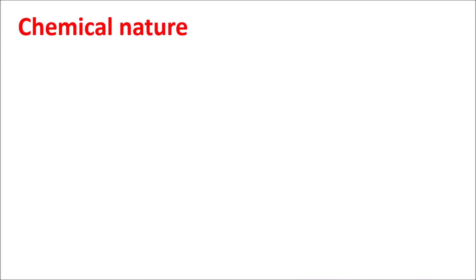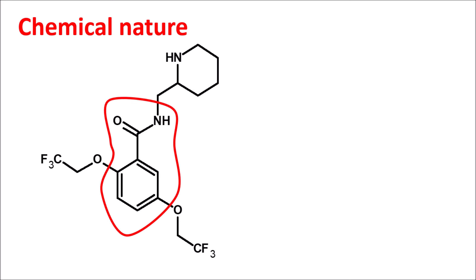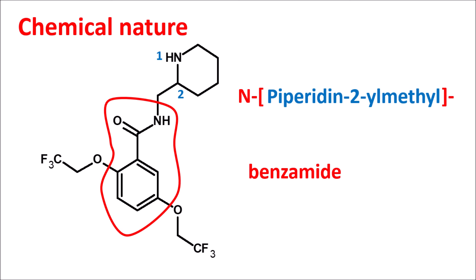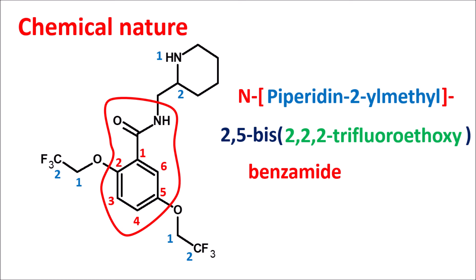Now let us see the chemical nature of this drug. The structure of Flecainide has a benzamide moiety. To this benzamide, on the nitrogen, one side chain is present — a piperidine ring system attached at the second position, written as piperidin-2-ylmethyl. On the benzamide ring, at the second and fifth positions, it has similar chains — so we write this as 2,5-bis. These are ethyl chains, each having three fluorine groups at the second position, written as 2,2,2-trifluoroethoxy. That is the complete chemical name of Flecainide.